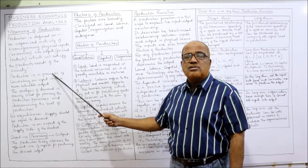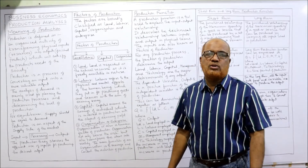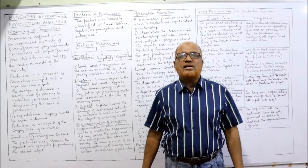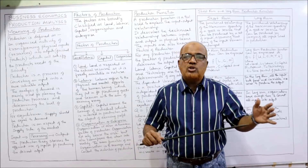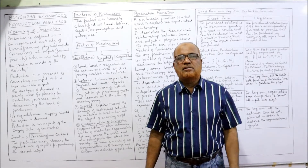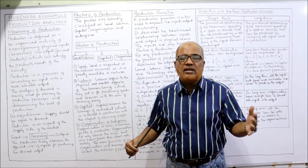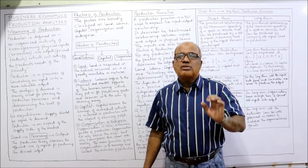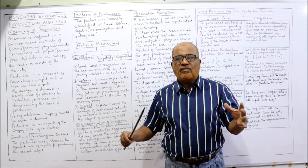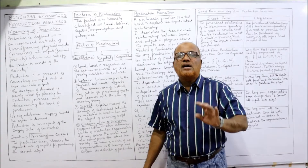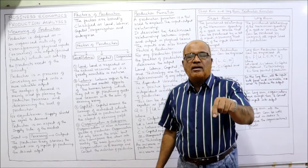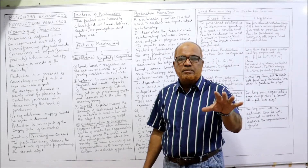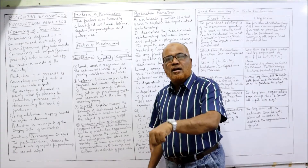Production is a process of converting input into output, and the analysis of demand is mainly used for planning the production process. Before making production, the producer has to analyze demand. That is why in unit 2 we discussed demand analysis — what is demand, law of demand, determinants of demand, and elasticity of demand. On the basis of demand analysis, the producer decides about supply, and according to supply they plan production.